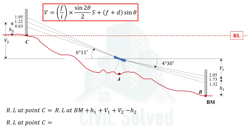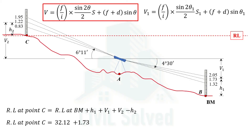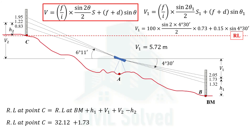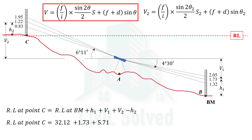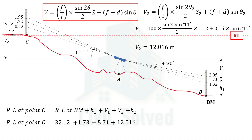Putting in the values: the reduced level at the benchmark is 32.12. The central Stadia reading h1 for the first setup is 1.73. V1 is calculated using the vertical distance formula with S1 and theta1 already known, giving V1 = 5.72 m. V2 is calculated similarly with theta2, S2, and constants, giving V2 = 12.016 m. The central Stadia reading h2 for the second setup is 1.22, which is subtracted. Performing the calculation gives the reduced level at point C as 50.356 m.